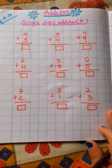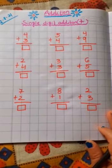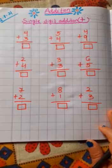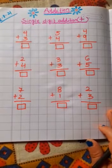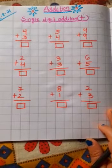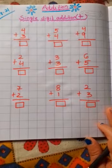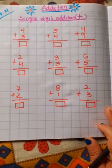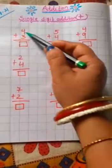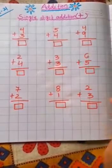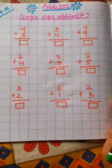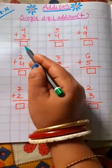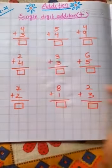Revision for your upcoming half-yearly examination. Alright children, so today we will learn single digit addition. This will be your revision class. Okay, let's revise single digit addition. Here you have to add numbers and after adding, you write the answer here. Alright children, so let's start.